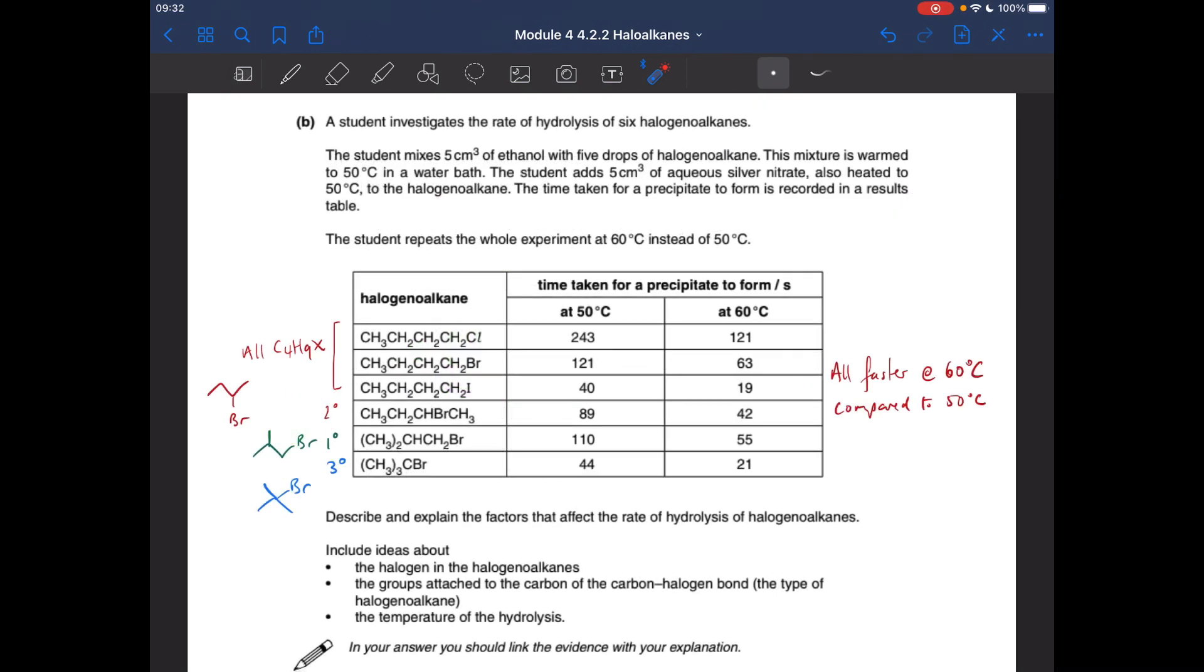So the final part of the question, this big seven marker where we've got to process all of these results and describe and explain the effect of the halogen in the halogenoalkane, what effect it has on the rate of hydrolysis, the groups attached to the carbon of the carbon-halogen bond - in other words the type of halogenoalkane, primary, secondary or tertiary - and then finally the temperature of the hydrolysis.